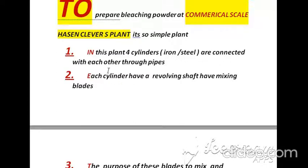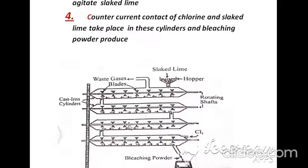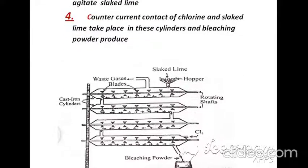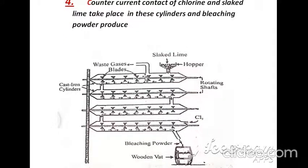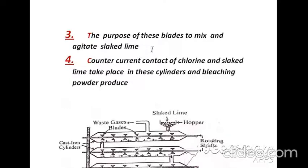In this plant, four cylinders are connected with each other through pipes, as you can see in the diagram. Each cylinder has a revolving shaft with mixing blades. You can observe in the center of these cylinders a straight line — that is the shaft — and the blades are also available for good mixing.